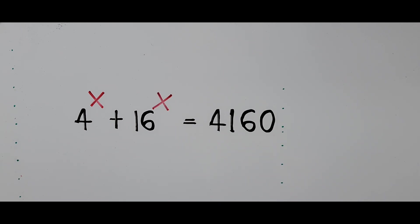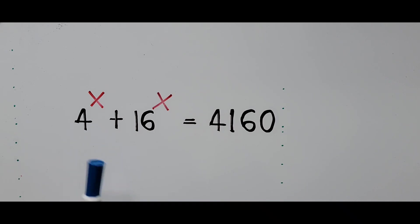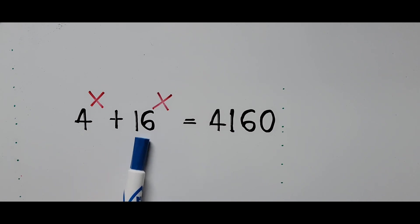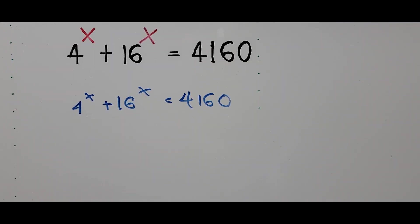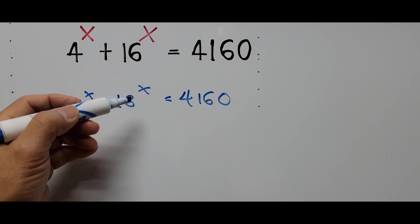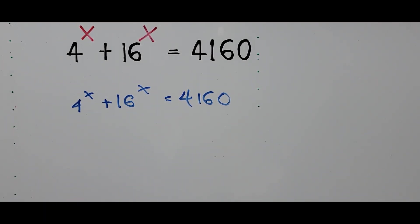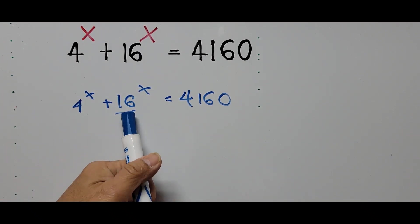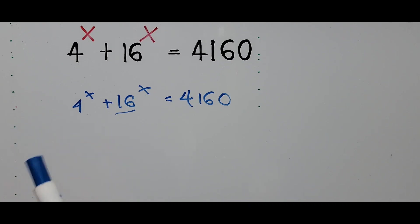Now let's start solving the equation. The first step in this kind of equation, where you have two terms both in exponential form and the right side is a constant, is to get a common base as much as possible. This means converting base 16 to base 4. So let's rewrite the equation: 4 to the power x plus 16 to the power x equals 4160.